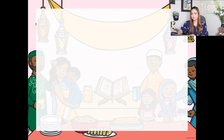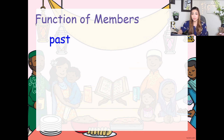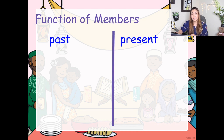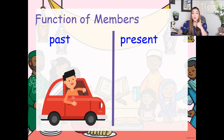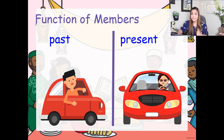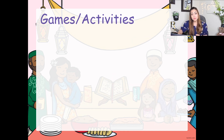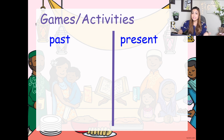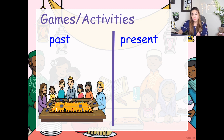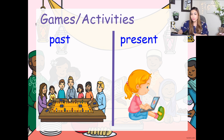Next, the function of members of the family in the past and in the present. So that means like in the past, for example, only men could drive. Now in the present time, women can drive. Also, in the past, people used to play like board games or hide and seek. But now in the present time, you guys are always in front of your iPad or any gadgets.